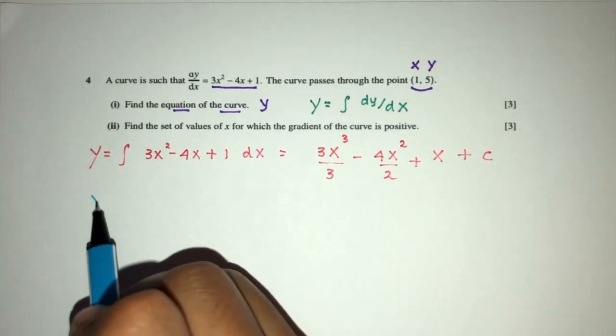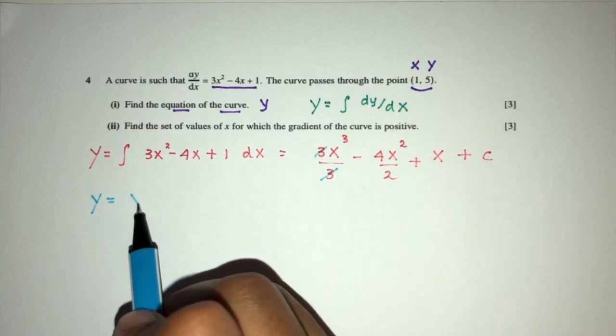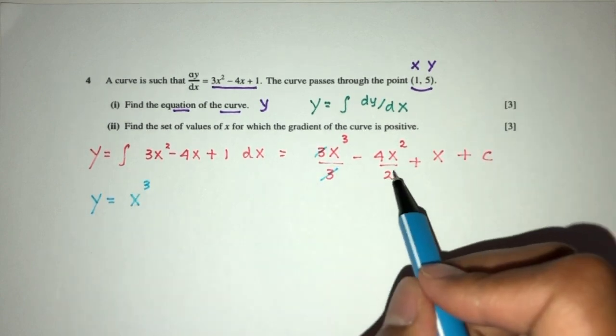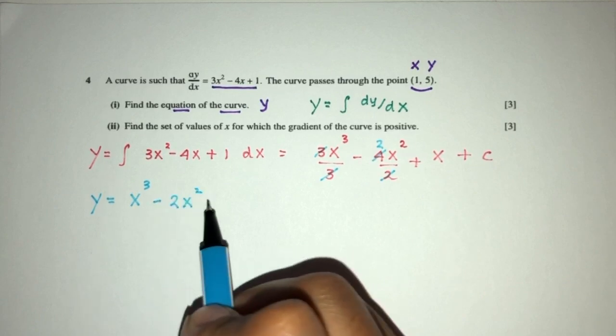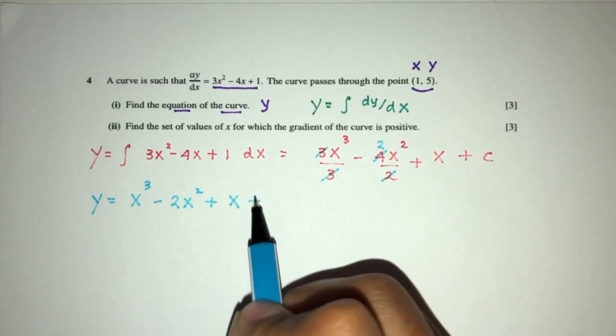So y will be - this will go away - x power 3, minus 2x squared, plus x, plus c.